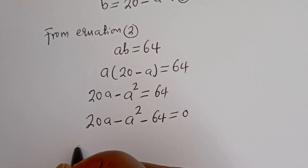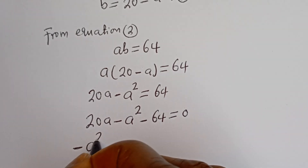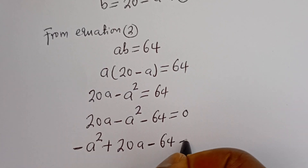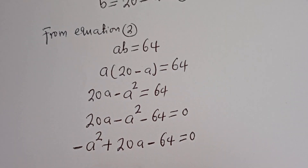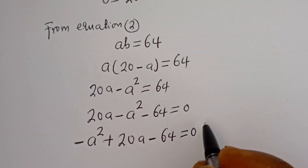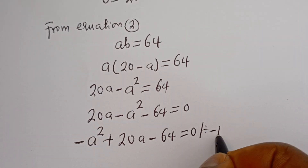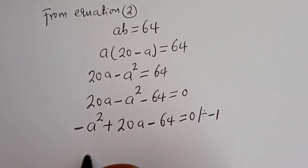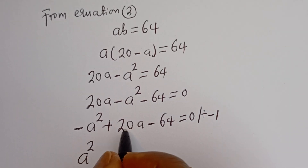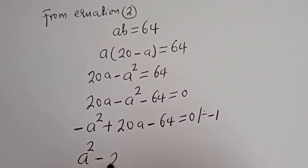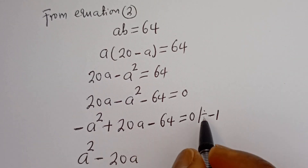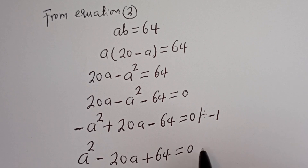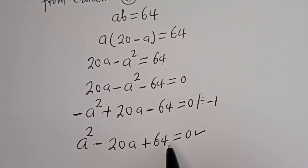Now let's put this in standard form: we have minus a squared plus 20a minus 64 is equal to 0. To make the leading term positive, let's divide all terms by minus 1. Minus a squared divided by minus 1 gives a squared; plus 20a divided by minus 1 gives minus 20a; minus 64 divided by minus 1 gives plus 64; equal to 0. This is a quadratic equation — let's solve using the quadratic general formula.